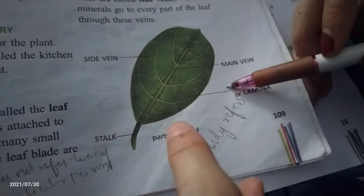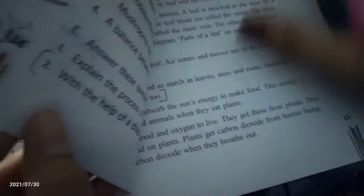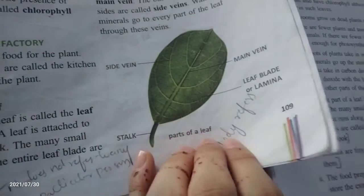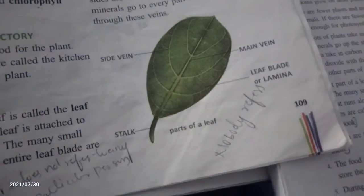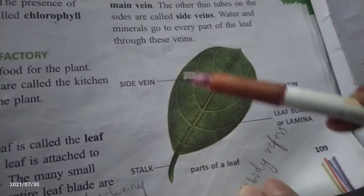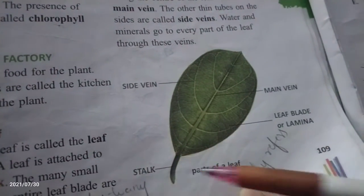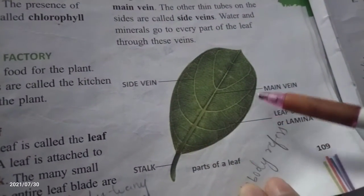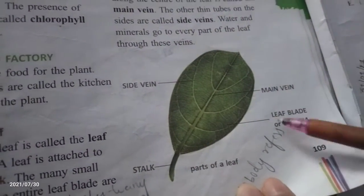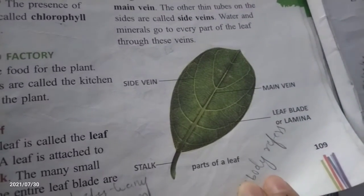First of all, draw these parts of the diagram and then answer the question. And what are the parts of the leaves? Here is the side vein, stalk, the main vein, and leaf blade — also called lamella.